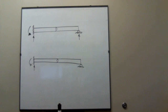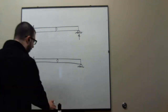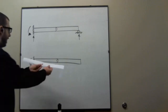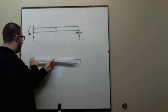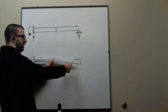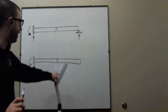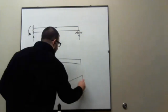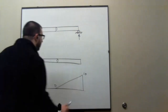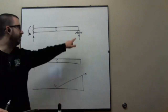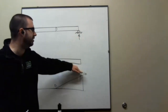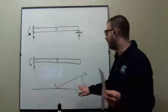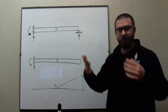Let's draw the influence line for the reaction at the roller on the right. We remove from the structure the ability to resist that reaction and move it through a unit displacement. I've got a hinge here and a fixed support here, so if I take this point and move it through a displacement, the influence line goes flat, goes up, and then goes down to one. That should be pretty straightforward.